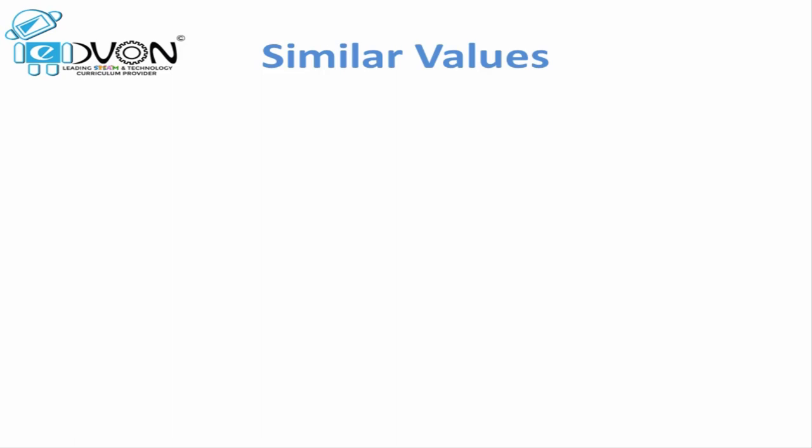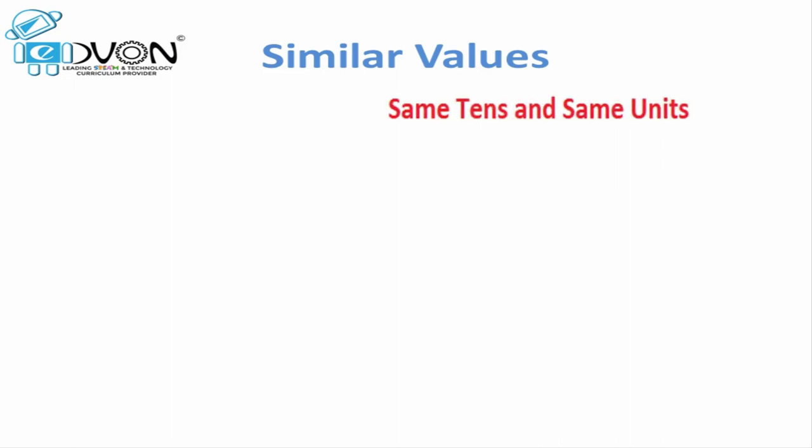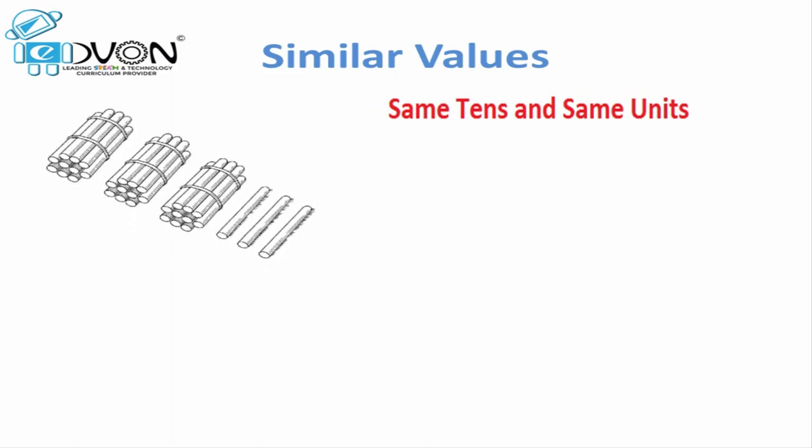What are similar values? Can you tell me what similar values could be? The word similar means same. In similar values, we have the same number of tens and the same number of units as well. Look at the first picture and count what value it could be.